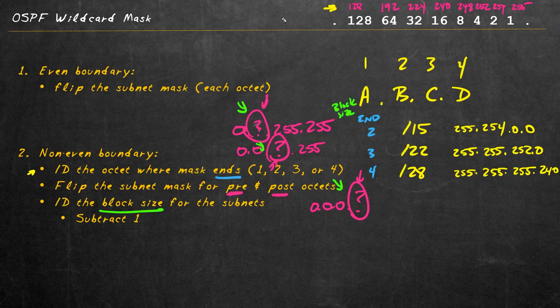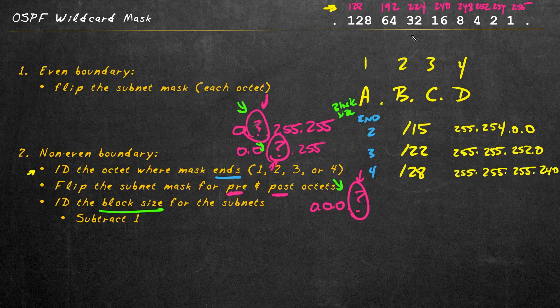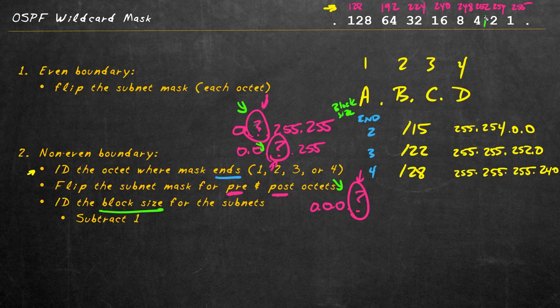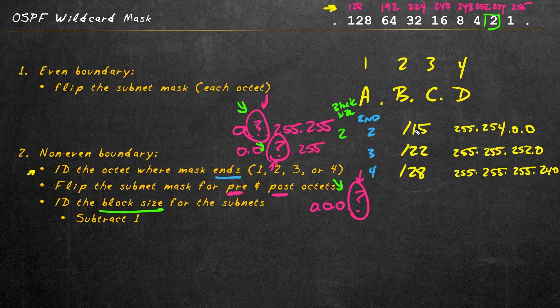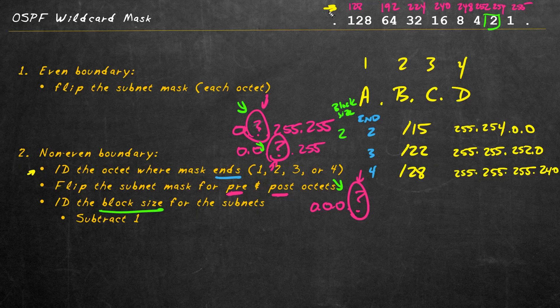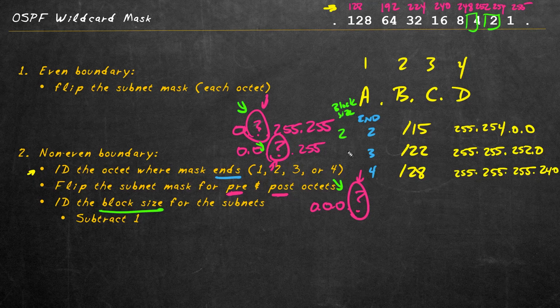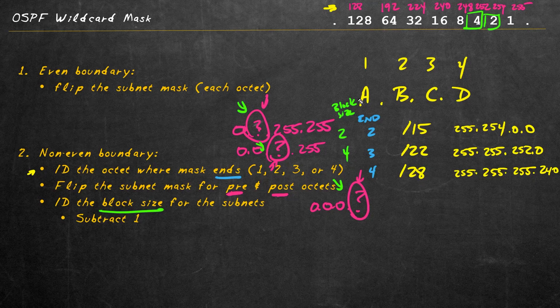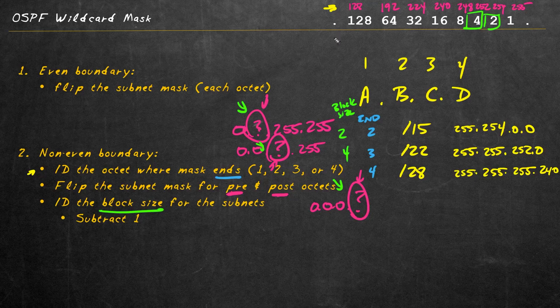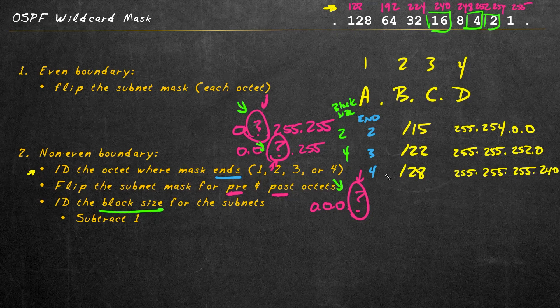For the slash 15, we have eight bits over here on the left. In the second octet, we just keep on counting. So we have 9, 10, 11, 12, 13, 14, 15. The block size would be a 2 for a slash 15. For a slash 22, we're now working in the third octet. So we start here at 16, 17, 18, 19, 20, 21, 22. That would be a block size of 4. For a slash 28, it'd be in the fourth octet. So we are at 24 bits right here, 25, 26, 27, 28, that would be a block size of 16.